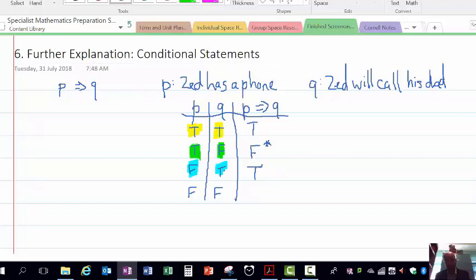Just because Zed didn't have a phone doesn't mean he can't call his dad. That's not inconsistent with the initial compound statement. So even if the hypothesis is false and the conclusion is true, it still gets a true value. In other words, if the antecedent is false and the consequent is true, it can still have a true value.